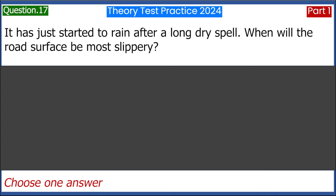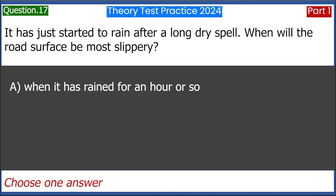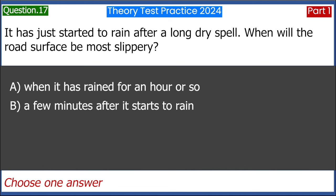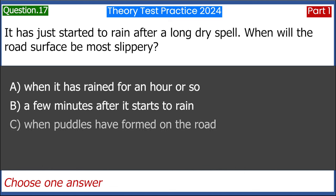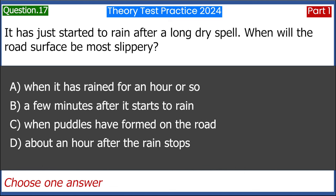It has just started to rain after a long dry spell. When will the road surface be most slippery? A. When it has rained for an hour or so. B. A few minutes after it starts to rain. C. When puddles have formed on the road. D. About an hour after the rain stops. Answer: B. A few minutes after it starts to rain.